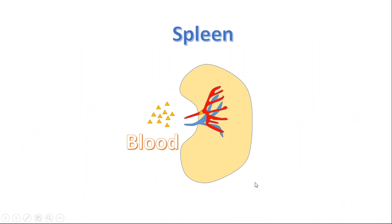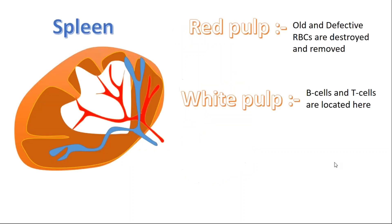Spleen is the largest of the secondary lymphoid organs and it is highly efficient in trapping and concentrating foreign substances carried in blood. The interior of spleen is a compartmentalized structure. The compartments are of two types: red pulp and white pulp. Red pulp is the site where old and defective RBCs are removed, whereas white pulp is the site where B cells and T cells are located.